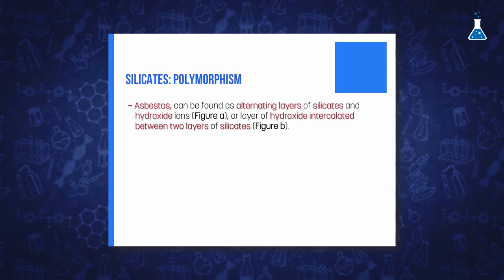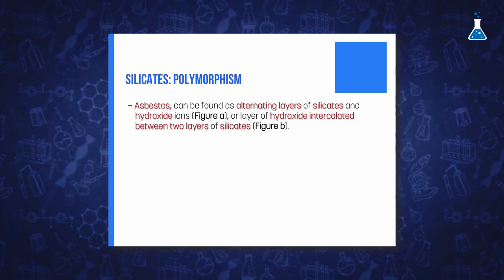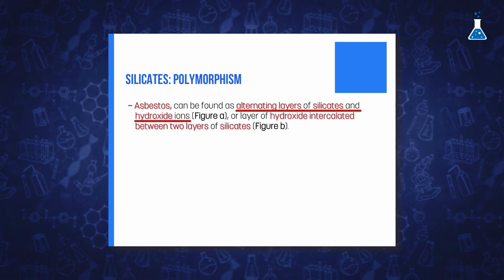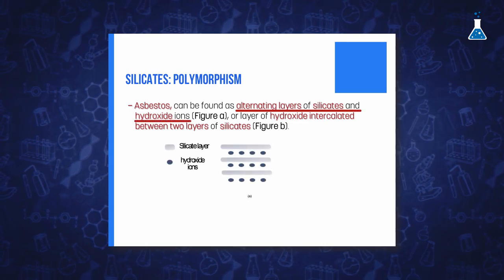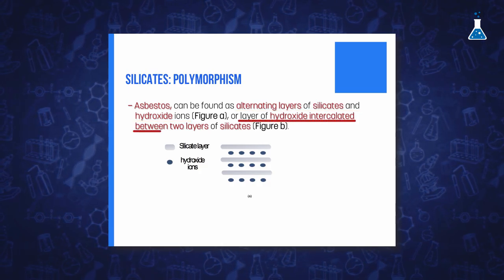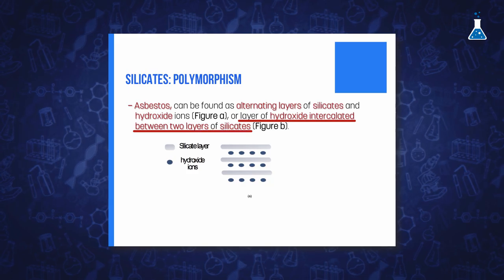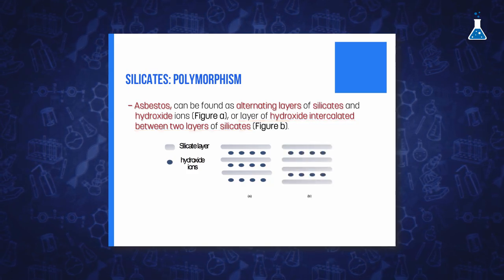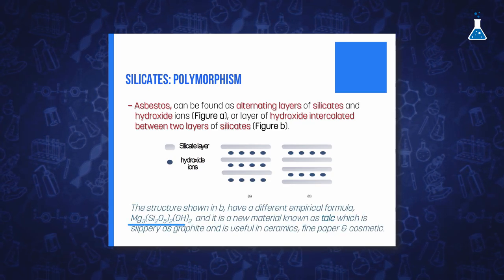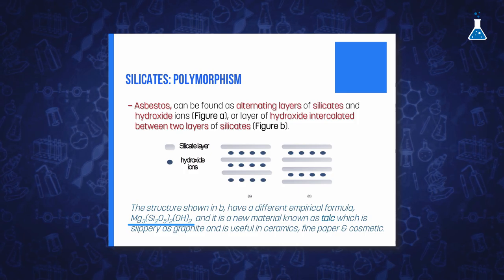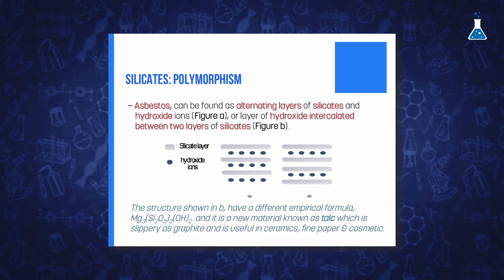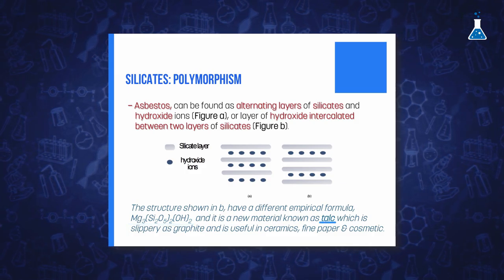For example, when the structure of white asbestos, mentioned earlier, consists of alternating layers of silicate and hydroxide ions, as appears in figure A, it is slightly changed and we have a layer of hydroxide ions between two layers of silicate ions, as is shown in figure B, we have a different formula for the compound, that is Mg3(Si2O5)2(OH)2, and a totally different material that is known as talc is formed.